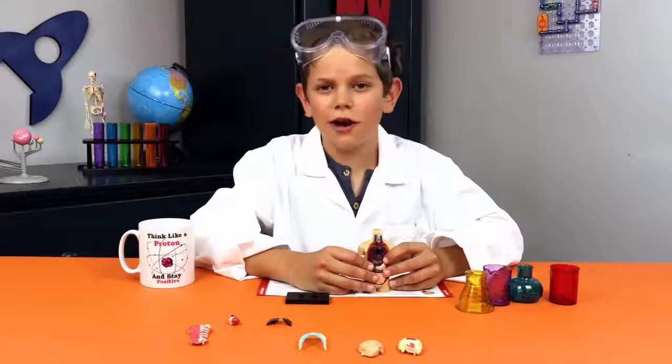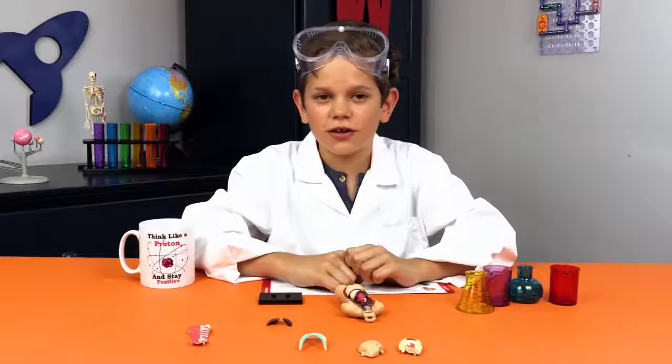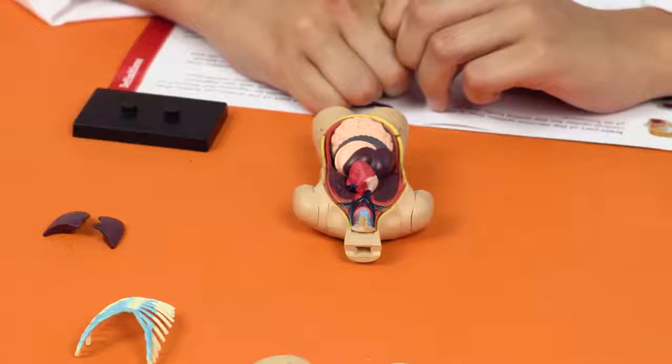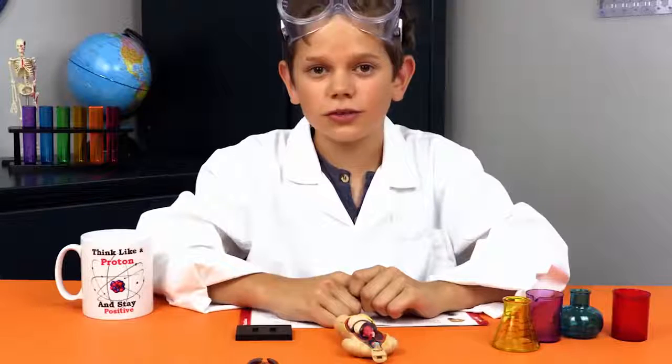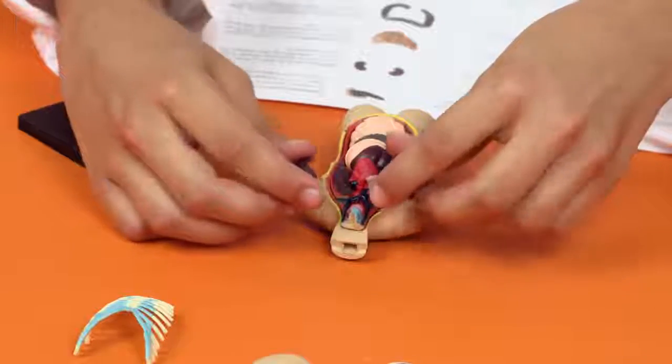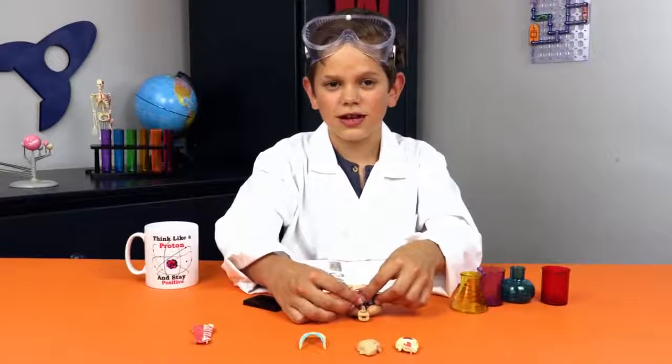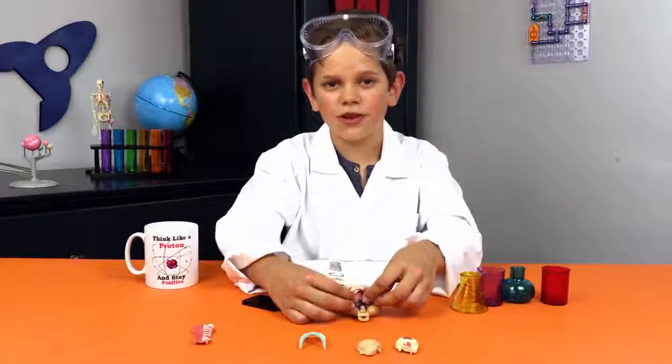In goes the heart, the main organ of the circulatory system which pumps blood around the body. It also beats 100,000 times a day. In go the lungs, part of the respiratory system which breathes in oxygen and breathes out carbon dioxide.